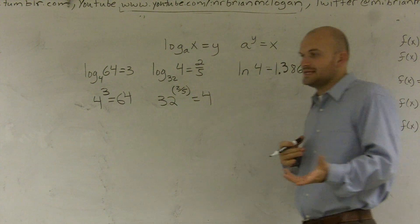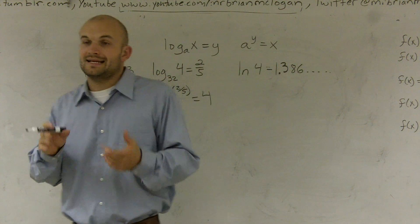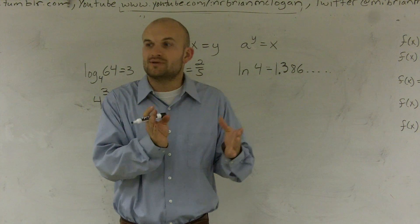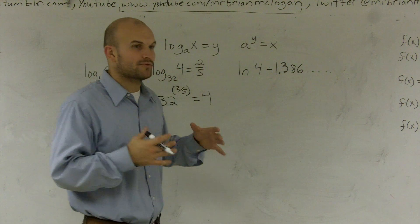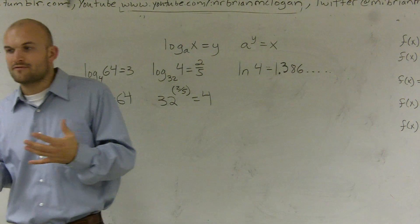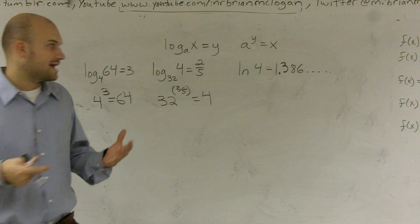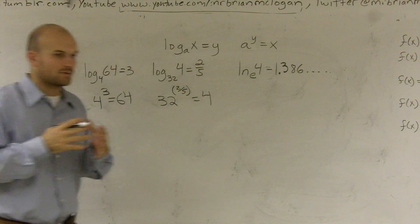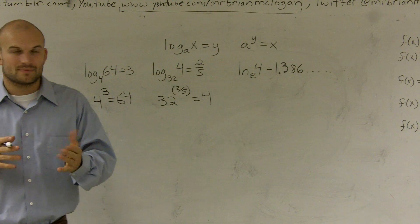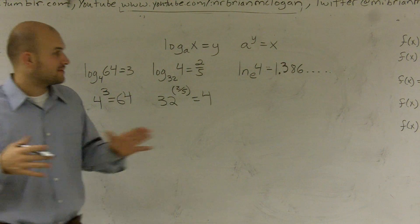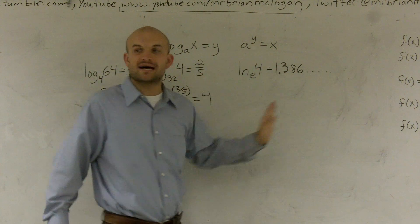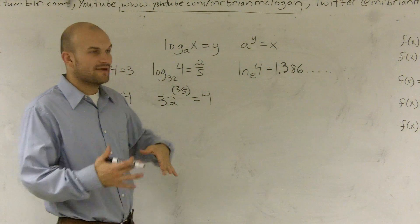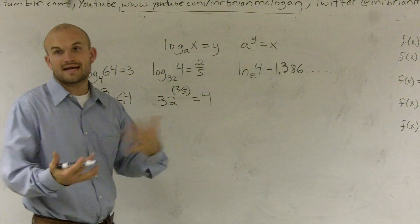If you guys remember e, we talked about e on compound interest. And e was what we represented for continuously interest. Well, we have a special logarithm then for when dealing with e. And all natural log is, is when we're using our base e. And remember, e is an irrational number. That's why I have this dot, dot, dot. It goes on forever. So however, natural logs and logs have the exact same properties.